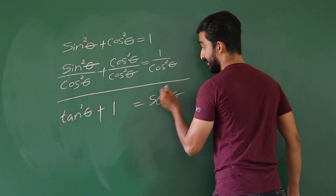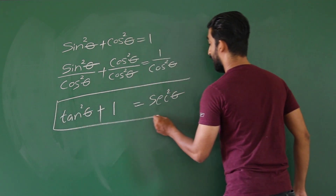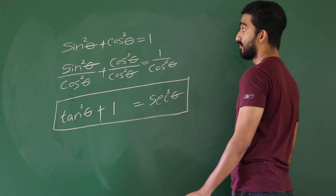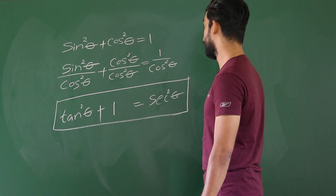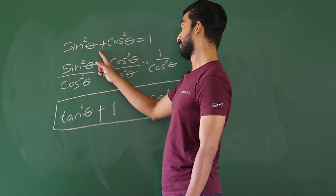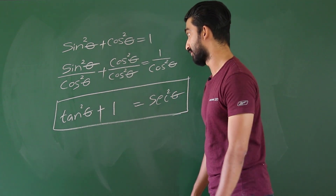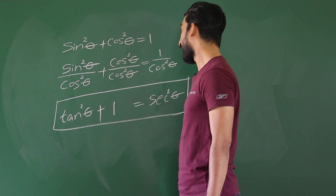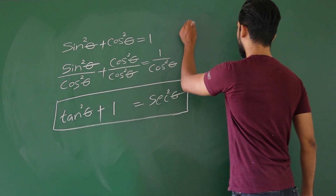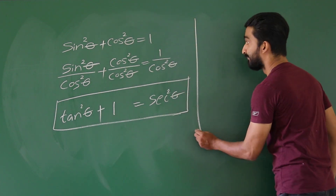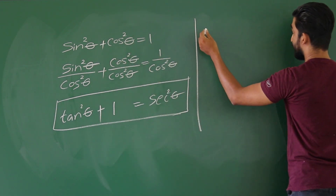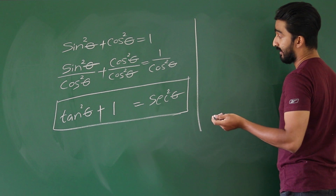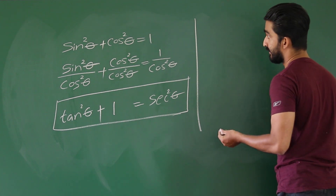So this gives us the trigonometric identity tan²θ + 1 = sec²θ, derived using the primary sin²θ + cos²θ = 1 identity and the tan θ = sin θ/cos θ identity. Now we use this primary identity again to derive our last basic trigonometric identity.